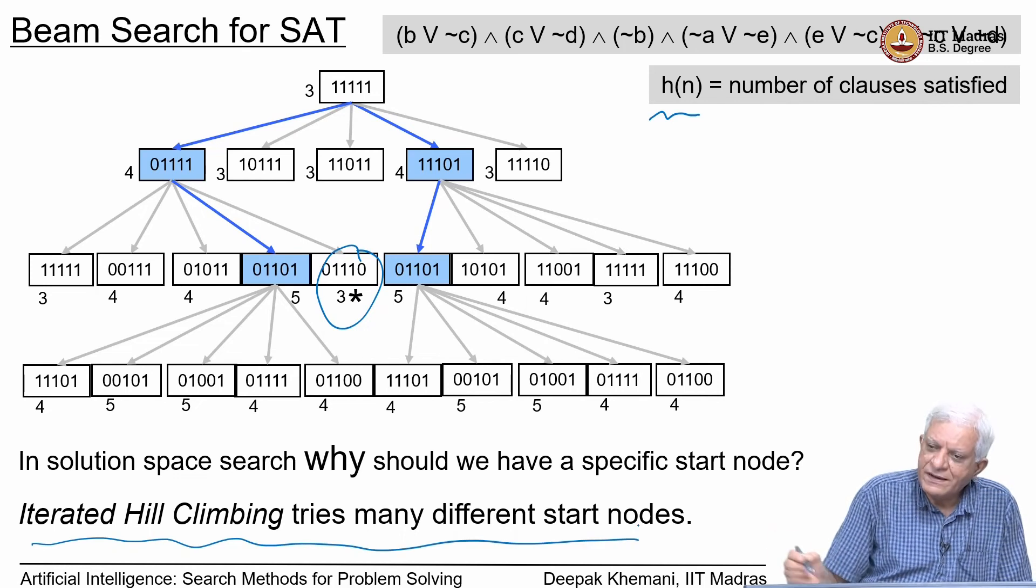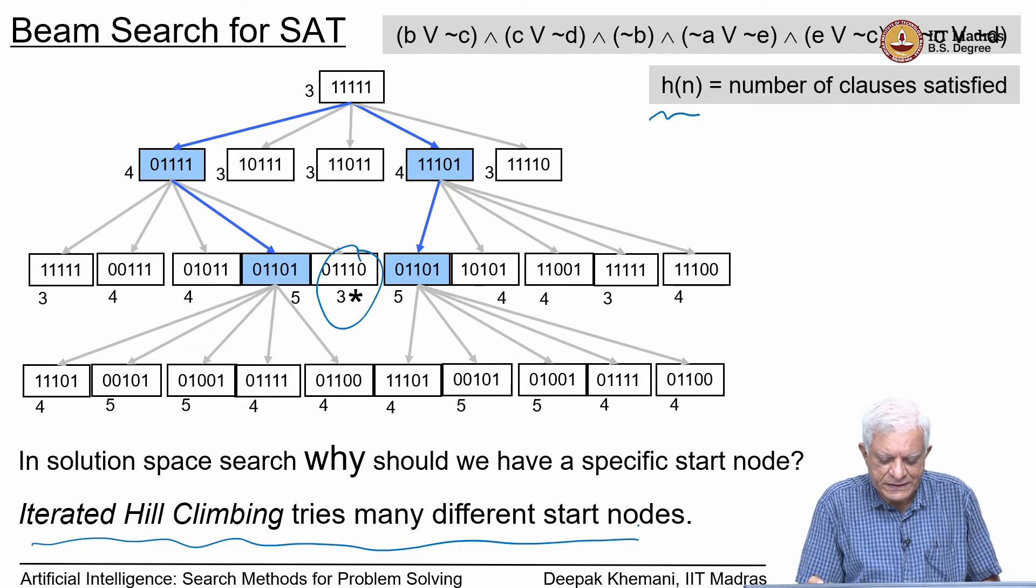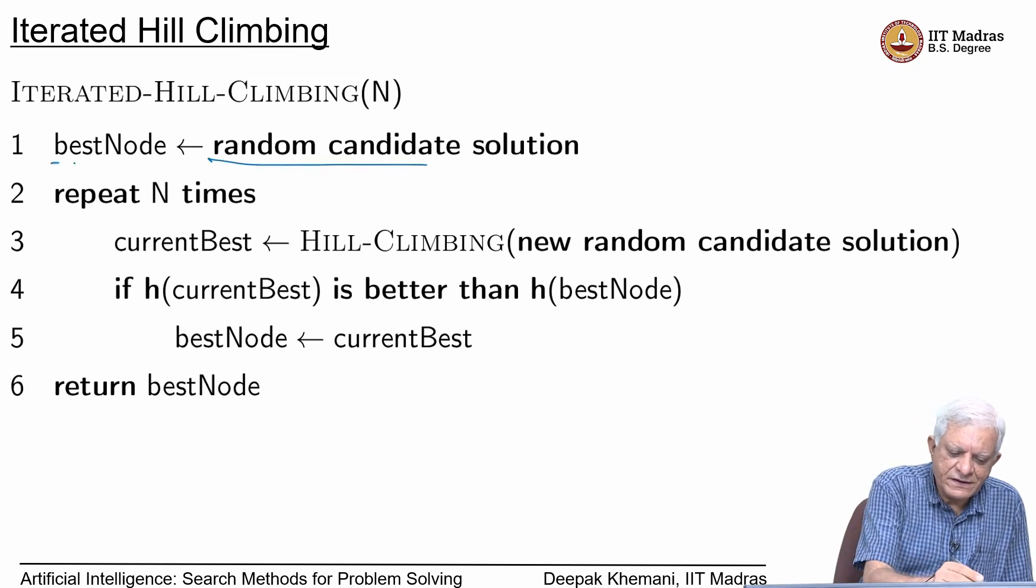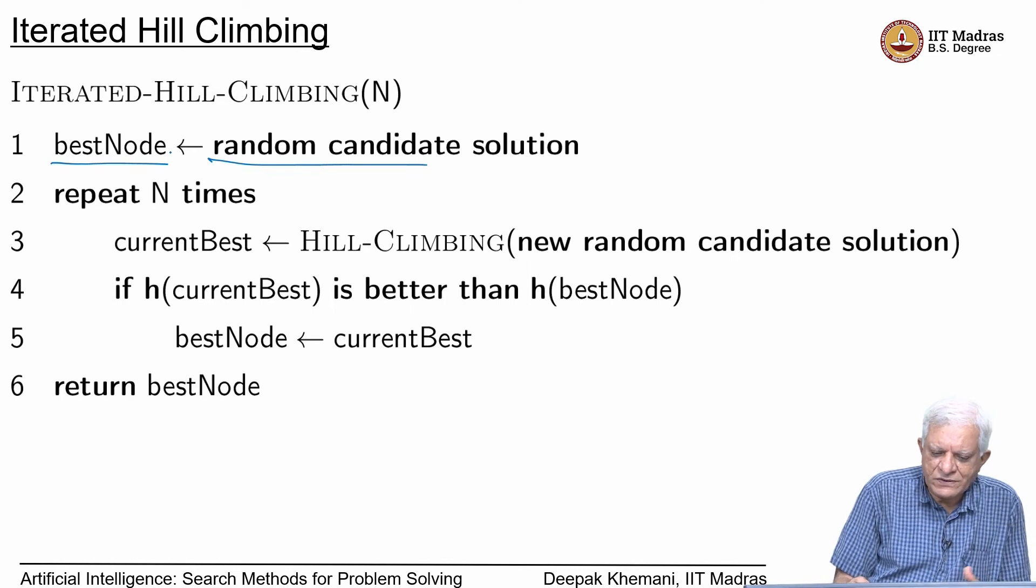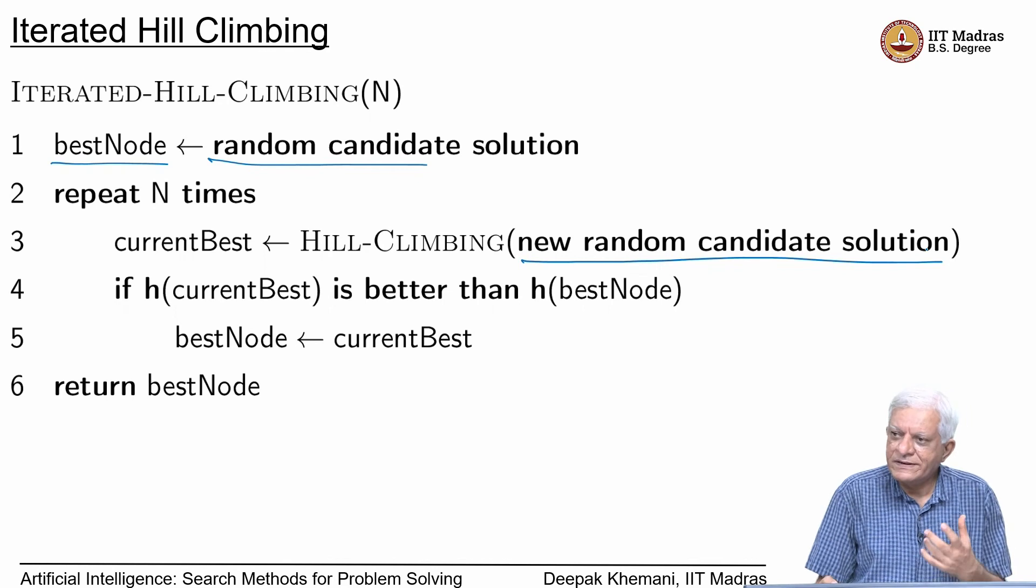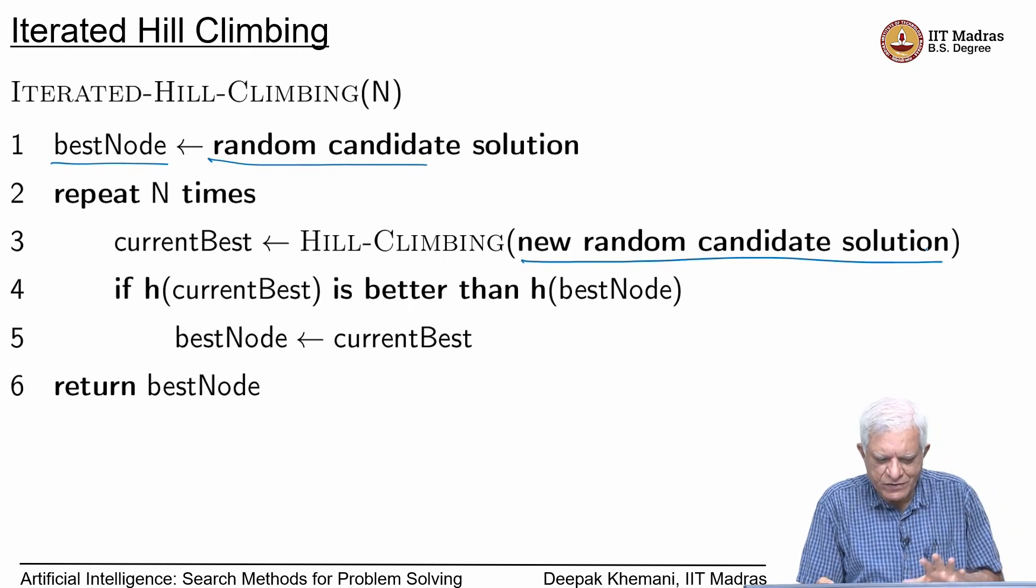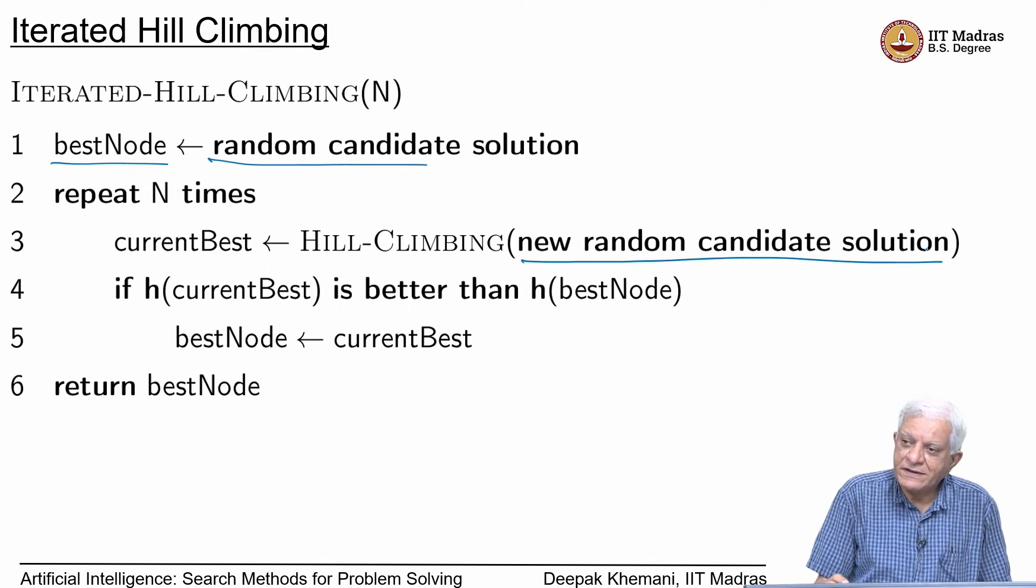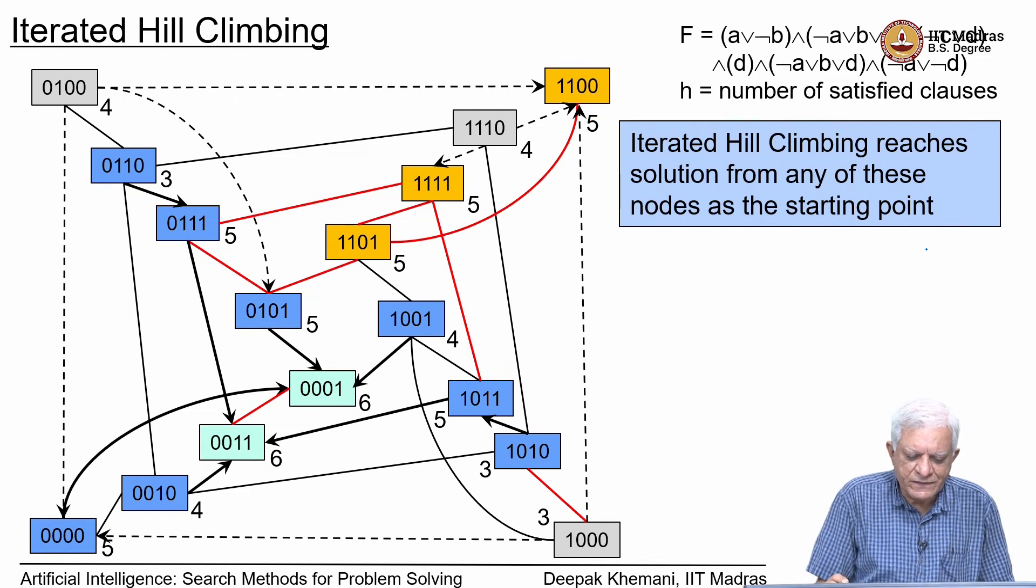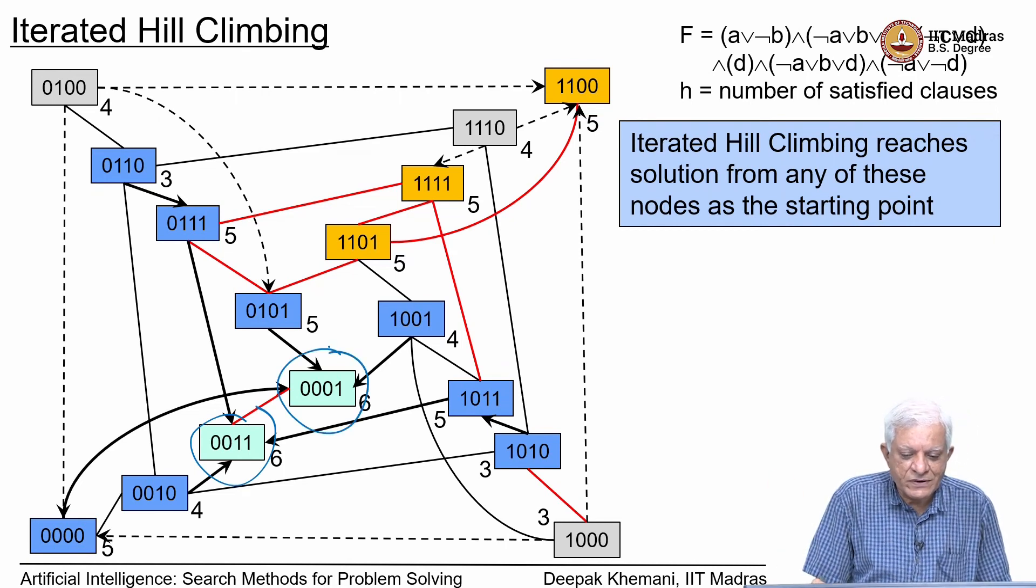Iterated hill climbing essentially says: just try many different start nodes randomly. That is the first flavor of randomness that we have introduced. This is the algorithm for iterated hill climbing. You first choose a random candidate and say that is the best we have found so far. Then choose some number n and repeat this whole thing n times. Do hill climbing starting with a new random candidate in every iteration. We hope that in one of those n cycles, it will find the solution. We saw with this small graph that we drew for a small SAT problem, that the chances increase as we start with different starting points. If we have started from any of these blue nodes, we would have reached the global maxima. Of course, if we had started with the global maxima, we would have stayed there itself. There is a good chance that you would find the solution.